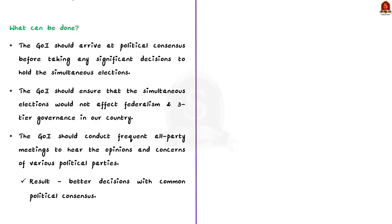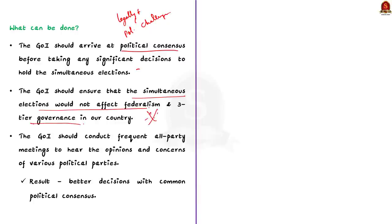Now, what can be the possible solutions? From all the discussed points, we can conclude that holding simultaneous elections will be a legally and politically challenging task. Apart from this, achieving political consensus among different political parties — especially regional parties — is also a challenging task. The central government should consider all these facts before taking any significant decisions and should keep in mind that simultaneous elections must not affect the federalism and three-tier governance of our country. This is all about this discussion. Let us move to the next topic.